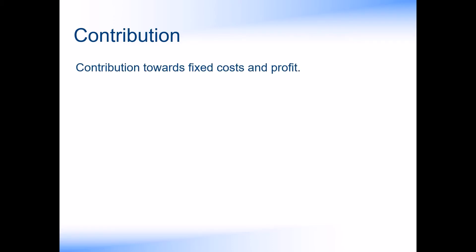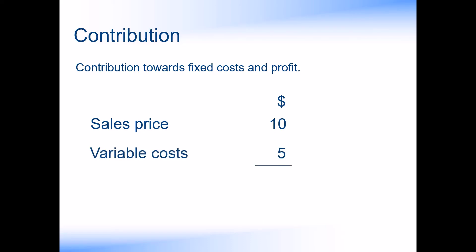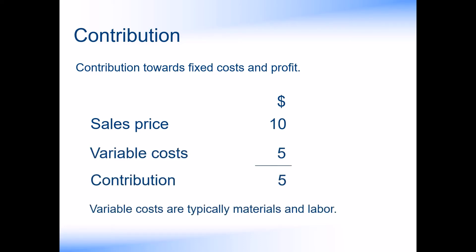The contribution that each product makes towards fixed costs and profit is calculated by taking the sales price, less the variable costs. The variable costs are typically materials and labour, but they can include other costs that vary directly with production, such as energy usage.